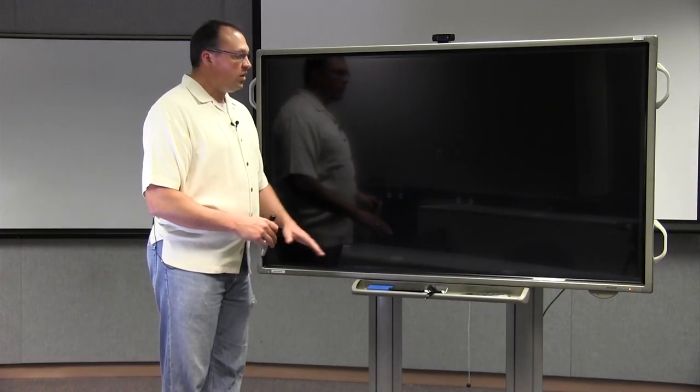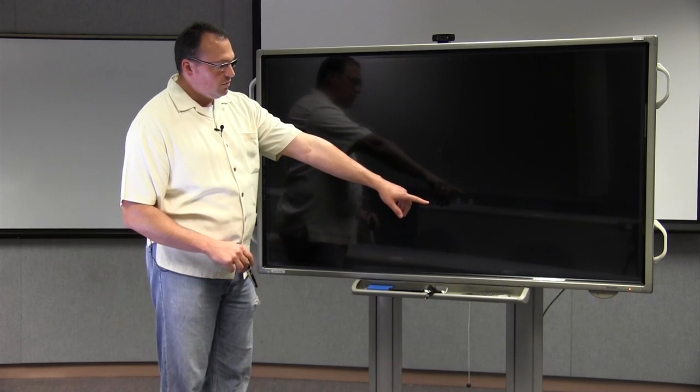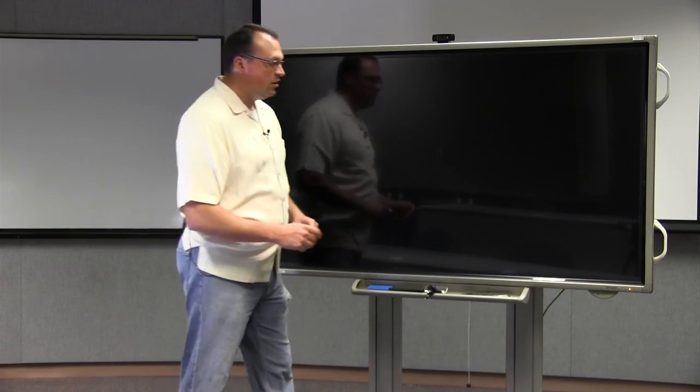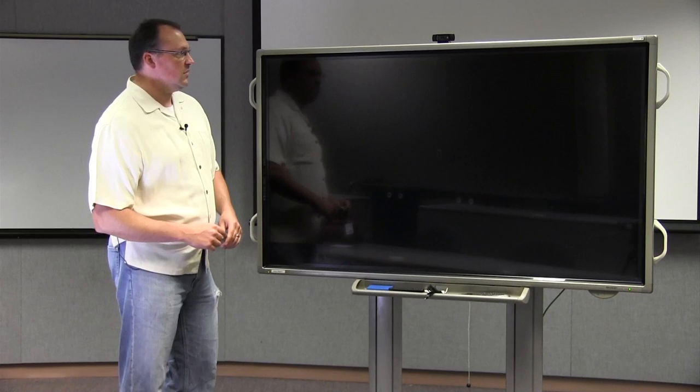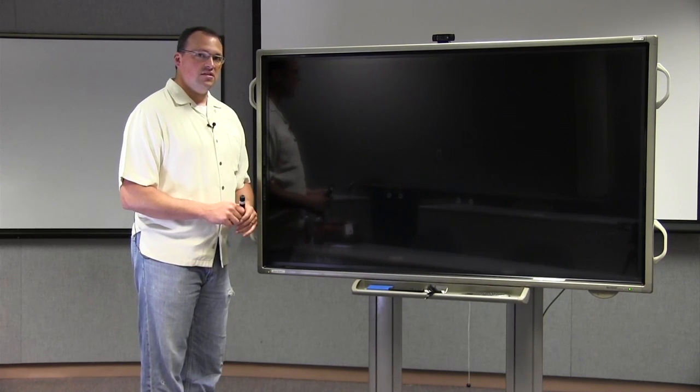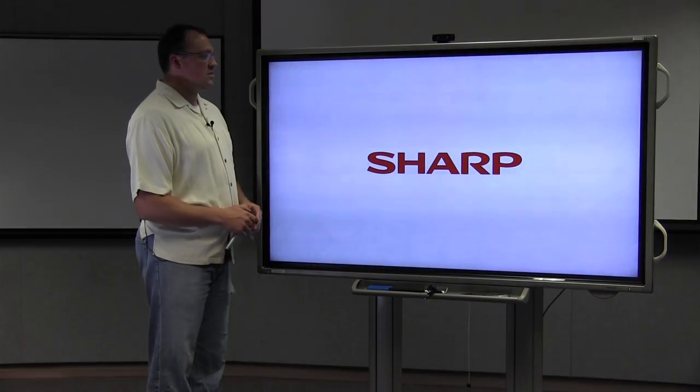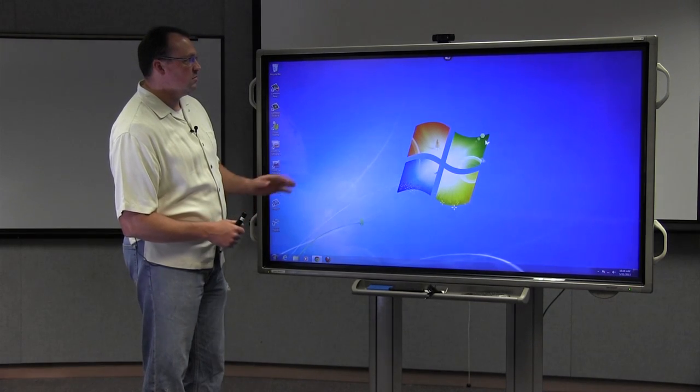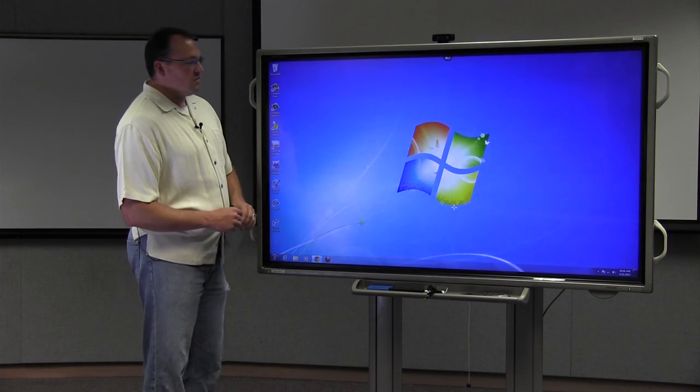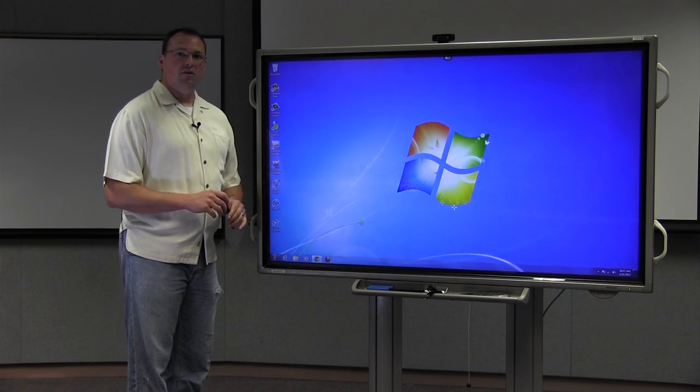So the first thing we're going to do is we're going to turn the board on. If the board is not already on whenever you plug the device in, you'll notice over here in the bottom right-hand corner that the light is red. We want this light to be green. There's a single power button. Press the button. The light will turn green. It takes just a moment for the device to power up. This is mainly because of the size of the display and because it's backlit. So it has to warm up very much like a large TV at home. Now that it's up, what you'll notice is you have a full Windows 7 operating system, identical to what you would have on your laptop or desktop computer in your office or at home.